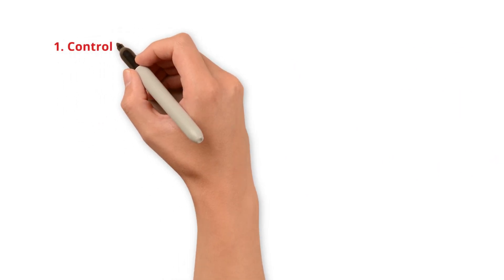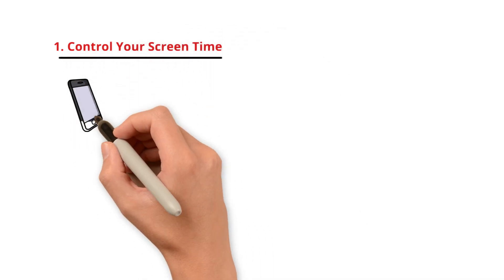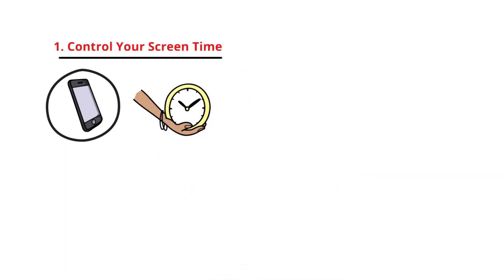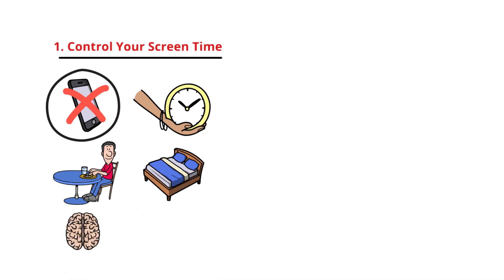Here are the clear steps you need to take. Number one. Control your screen time. Your phone is your biggest dopamine dealer. Limit your screen time. Start small. No phones during meals or 30 minutes before bed. Your brain needs time to reset. You can use apps to track and limit your screen time.